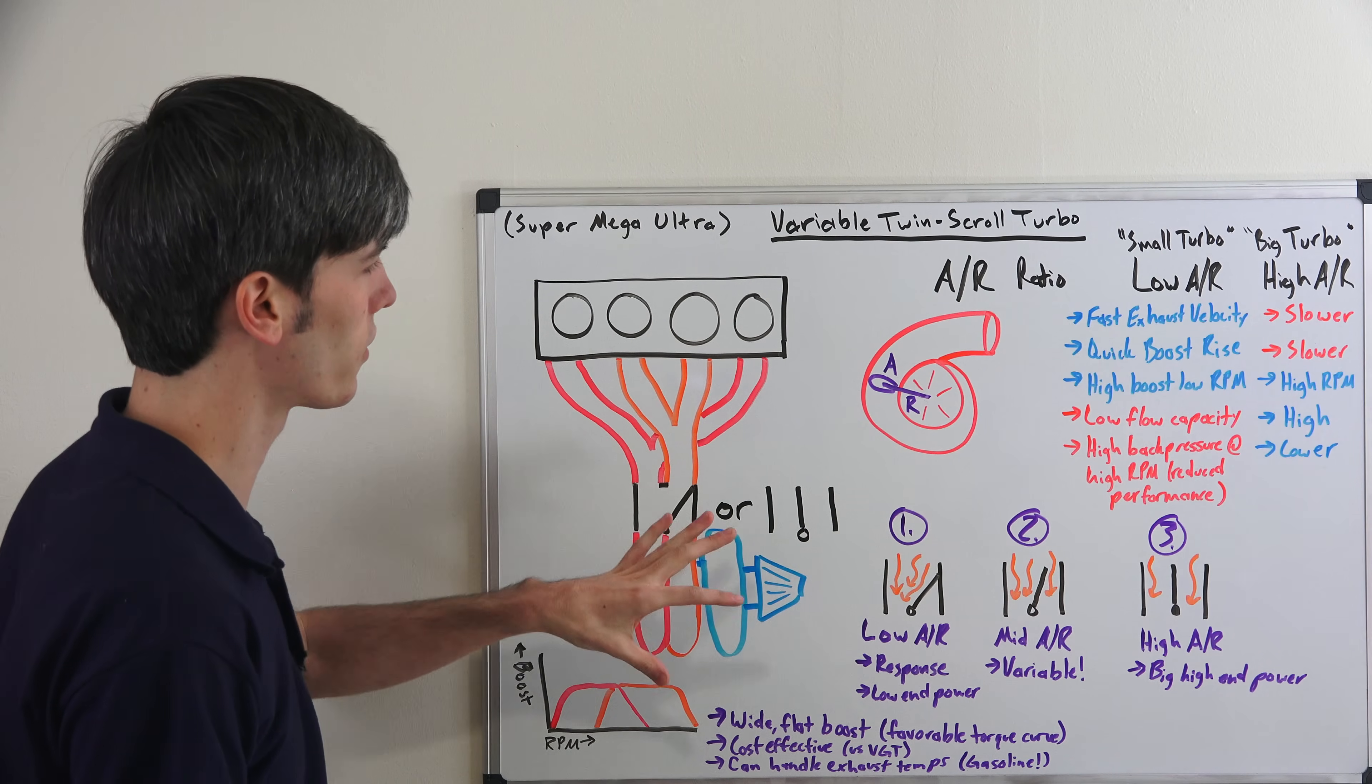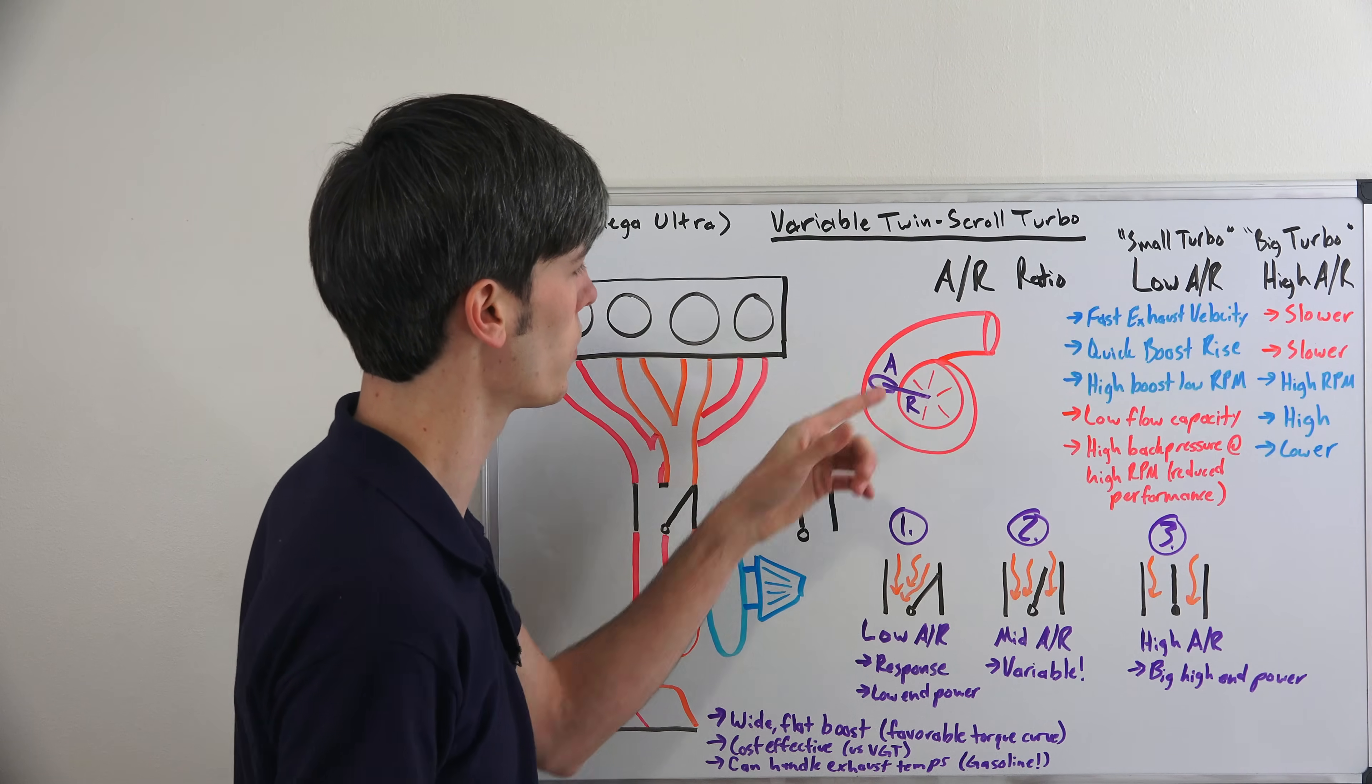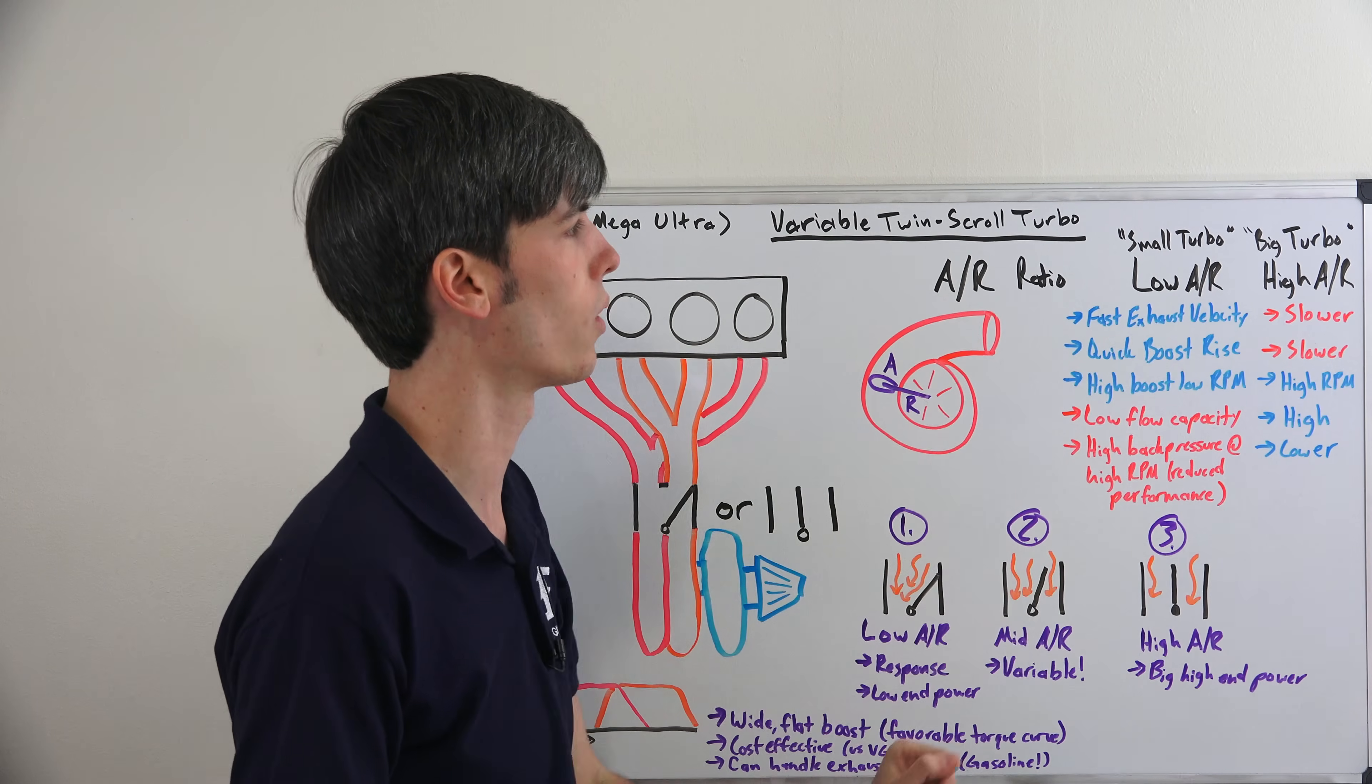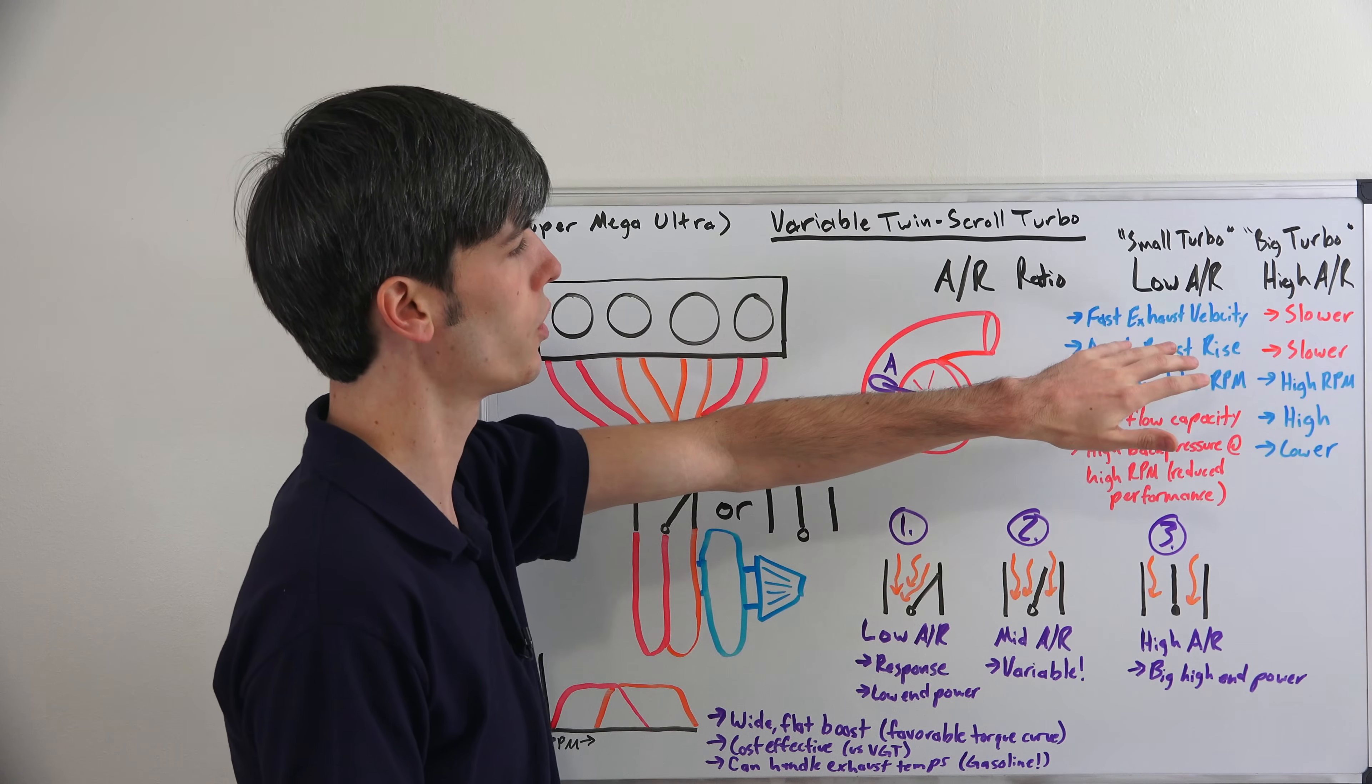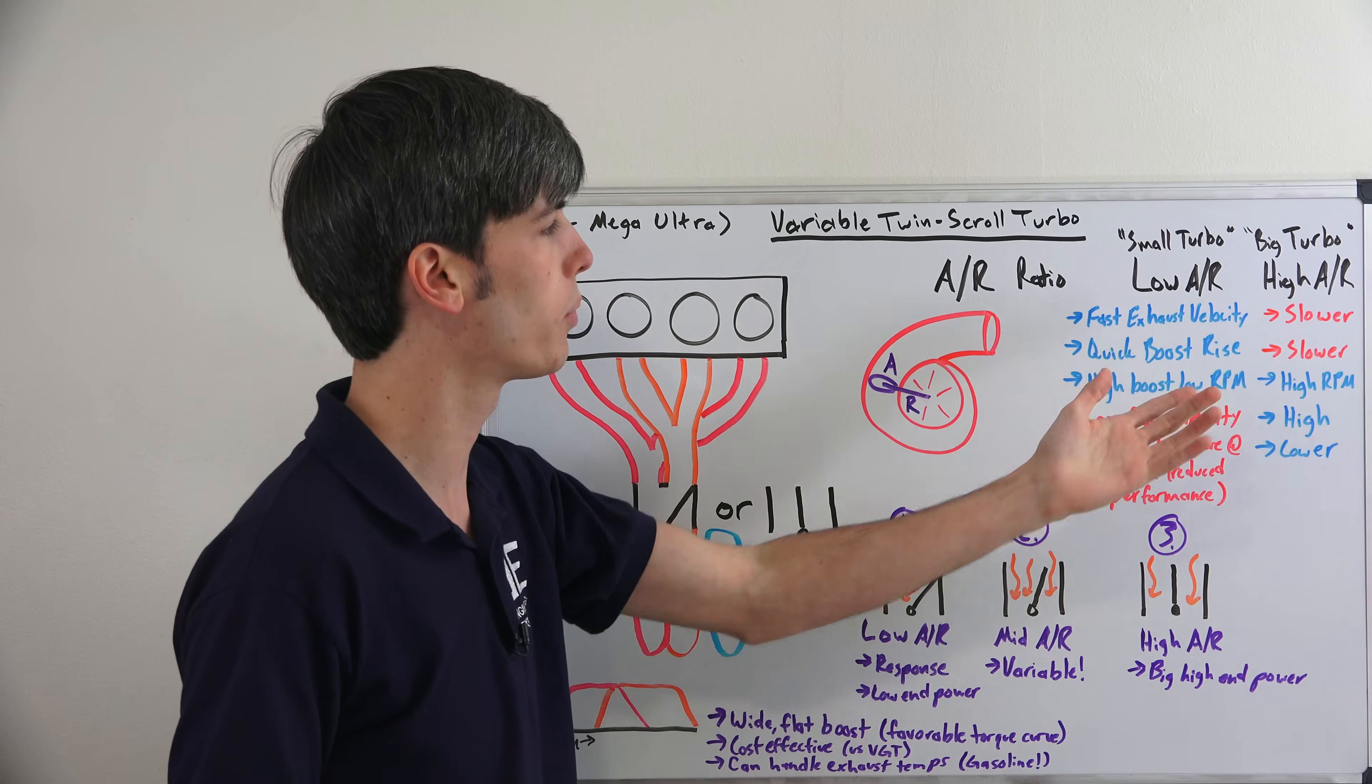So the reason why this is beneficial has to do with the AR ratio. So this is the cross-sectional area versus the distance, the radius from the center of the turbo to that area. Basically this helps define the size of a turbocharger. Small turbochargers have a low AR ratio and big turbochargers have a high AR ratio. With a low AR ratio, you have a fast exhaust velocity, you have a quick boost rise so the engine is very responsive, it seems fun to drive. You have high boost at low RPM.